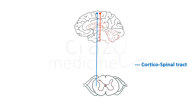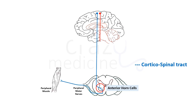The corticospinal tract travels downwards to the spinal cord and synapses with anterior horn cells in the spinal cord. Axons of these cells give rise to peripheral motor nerves which innervate peripheral muscles — these are known as lower motor neurons. So we can say that any fibers above the anterior horn cells are upper motor neurons, and fibers below are lower motor neurons. Also remember, anterior horn cells are also part of lower motor neurons.